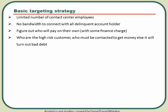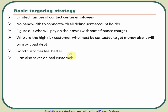However, there are high-risk customers who don't have much money and have taken loans from many places — whoever contacts them for collections first will get the money. These customers require direct contact. By targeting only high-risk customers for contact and leaving good customers to pay on their own, good customers feel better because they're not embarrassed, and the firm saves resources by focusing on customers who wouldn't have paid otherwise. It becomes a win-win.